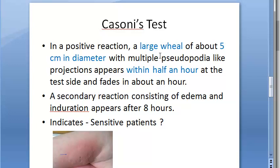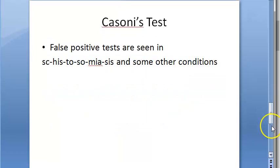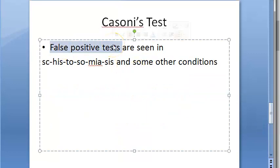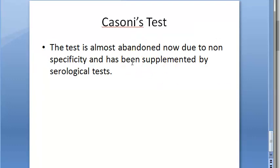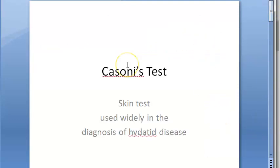A positive result shows a large wheal of about 5 centimeters with multiple pseudopodia-like projections within half an hour, fading after one hour. A secondary reaction with edema and induration can appear after eight hours, indicating sensitivity to hydatid disease. This test gives many false positives with schistosomiasis, so it is abandoned and replaced with serological tests. Remember: Cassoni's test means hydatid disease.